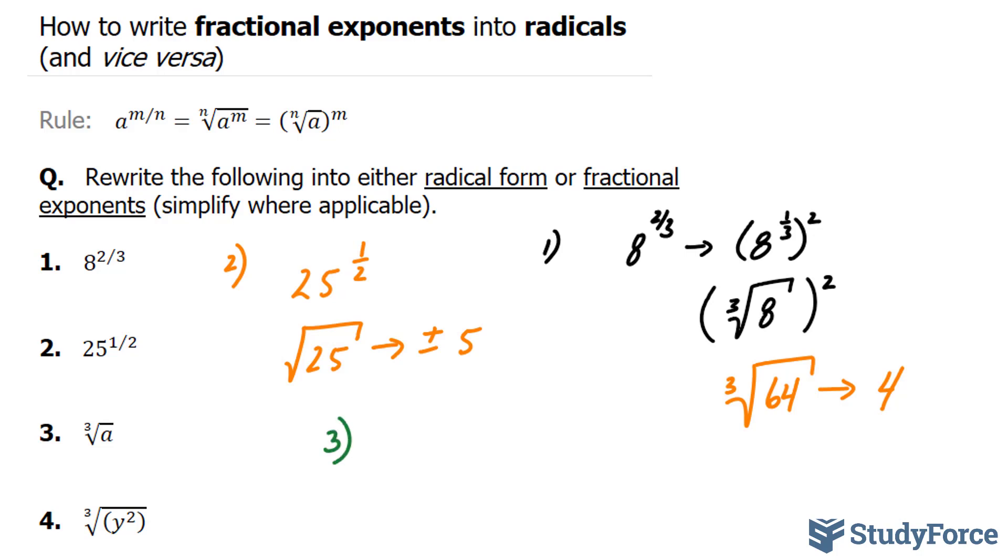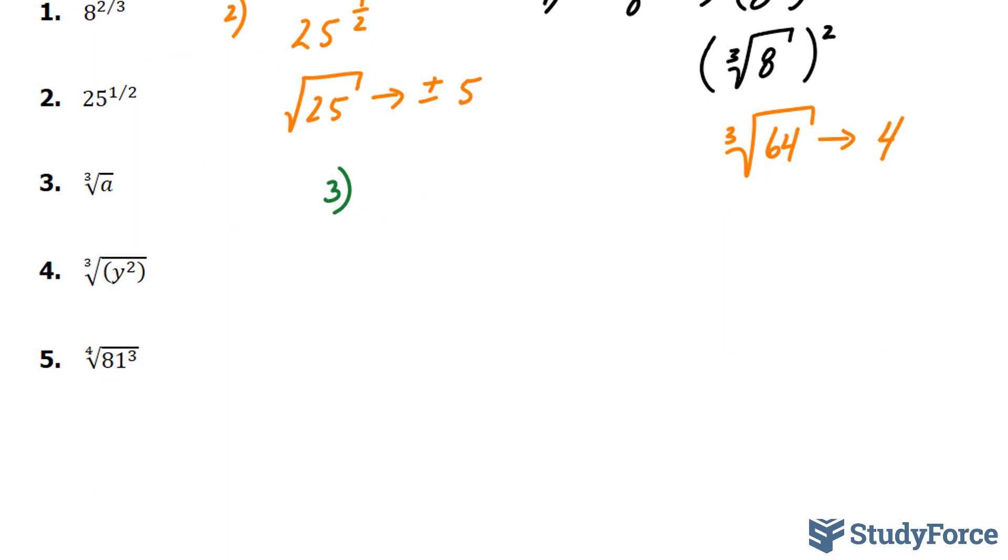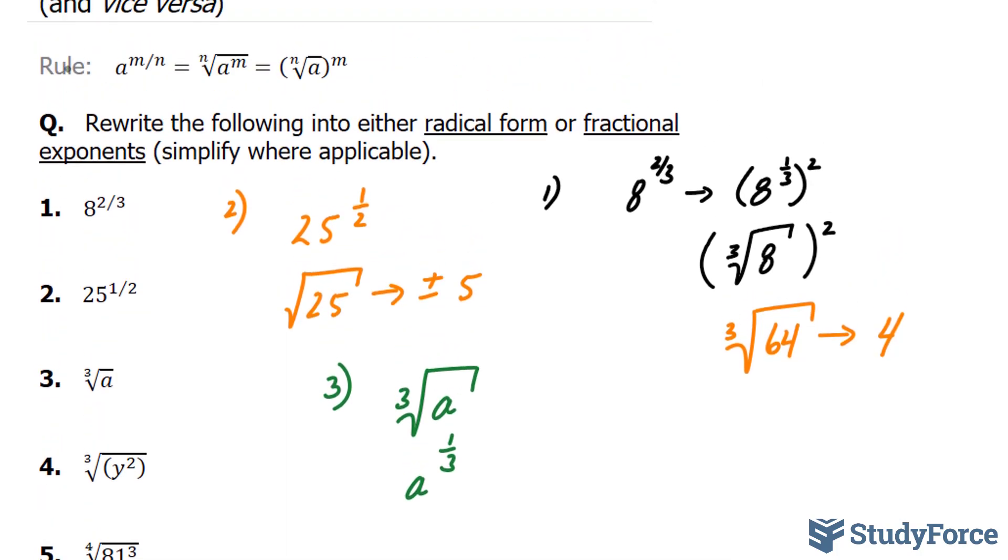This time, this expression is a radical, so we assume they want us to write it as a fraction. We have the third root of a, and this can be written as a to the power of 1 over 3. Now, if you're confused, you can always refer back to this rule.